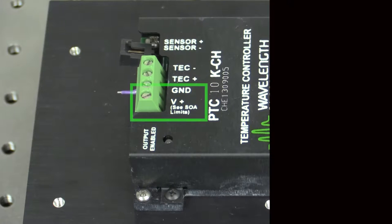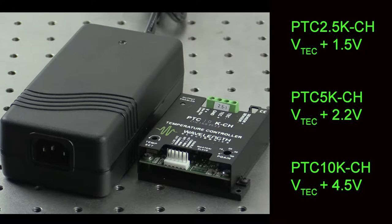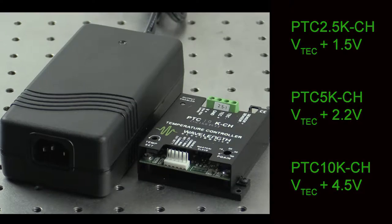One power supply feeds both the control electronics and the output drive current. For minimum internal heat dissipation, keep the power supply voltage just above the voltage you want delivered to the thermoelectric or resistive heater.